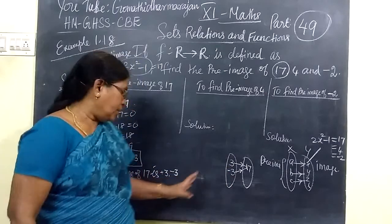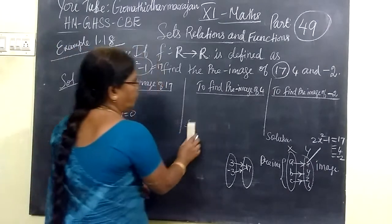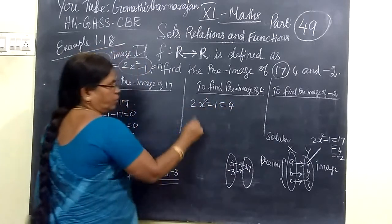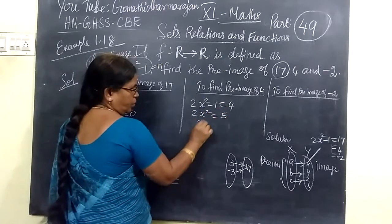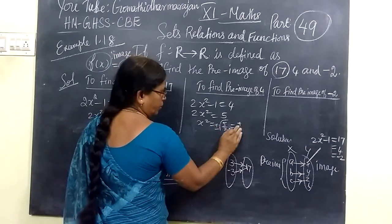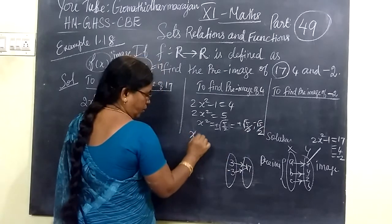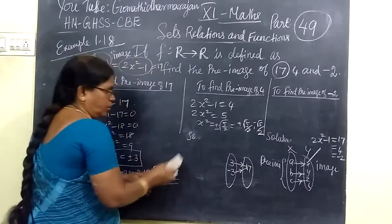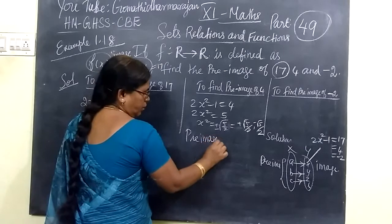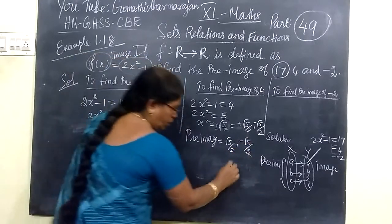Next, we are finding the preimage of 4. So 2x² - 1 = 4, which means 2x² = 5. Therefore x² = 5/2, so x = ±√(5/2). Thus the preimage of 4 is {+√(5/2), -√(5/2)}.